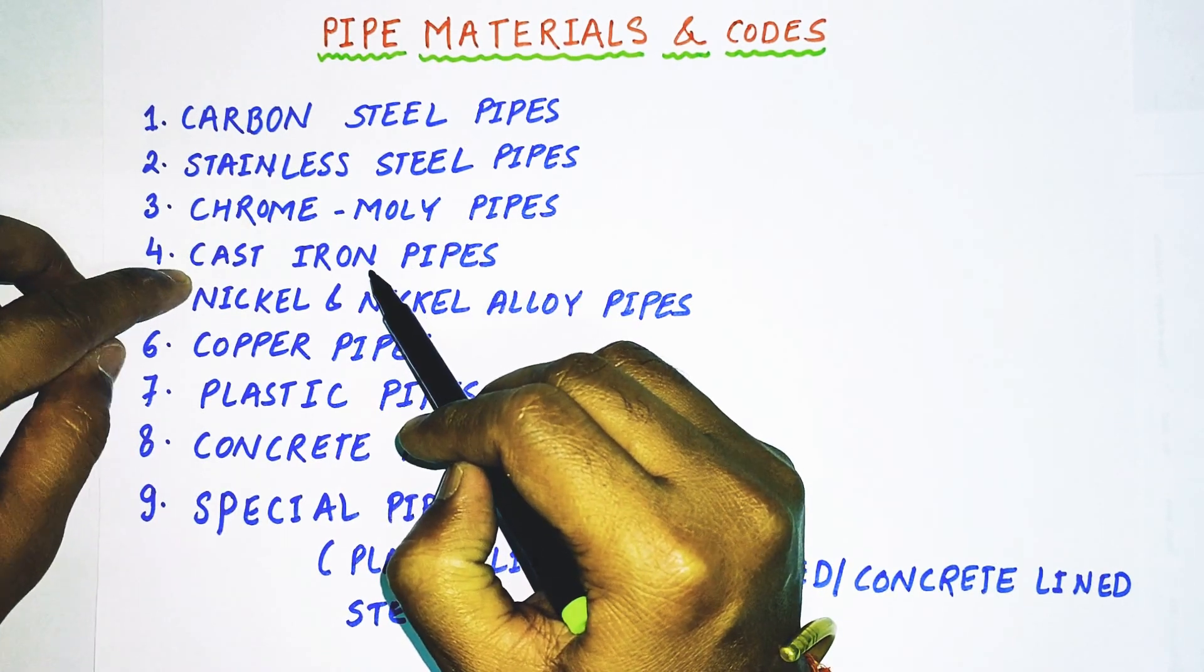First we will talk about the standards. We have two standards: ASTM, which stands for American Society for Testing and Materials, and ASME, which stands for American Society of Mechanical Engineers.